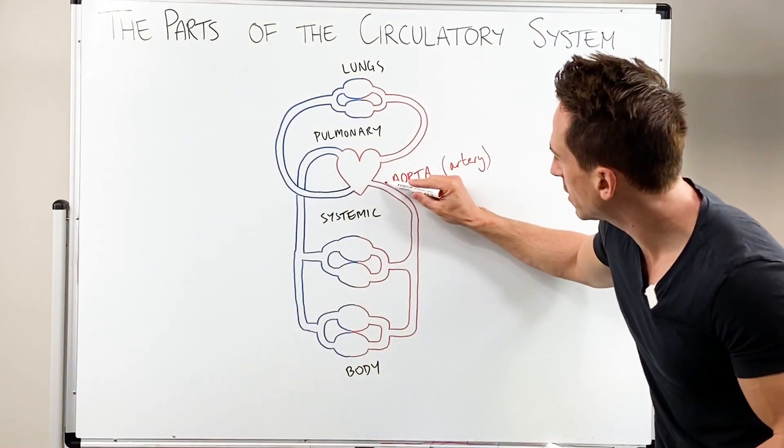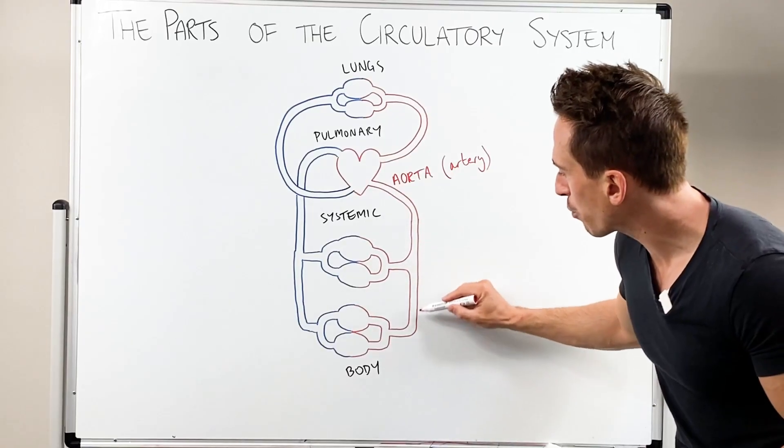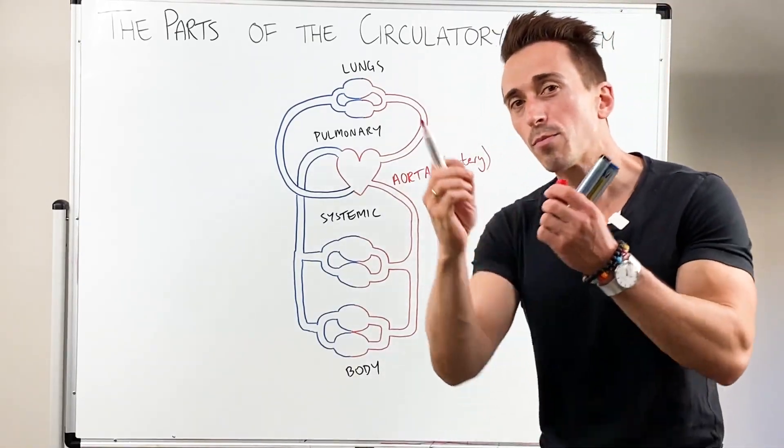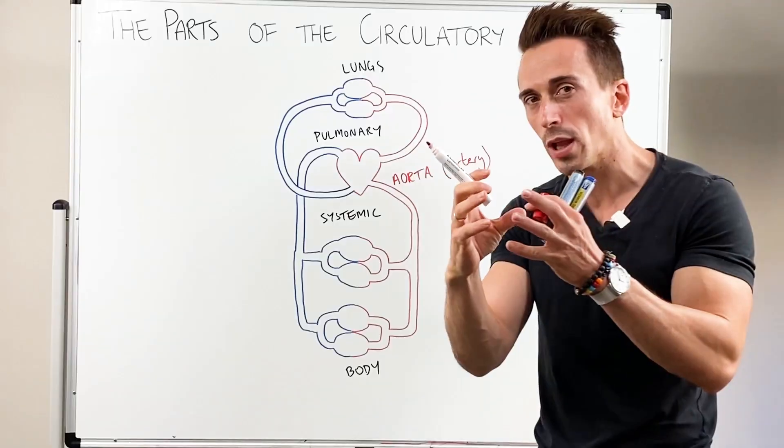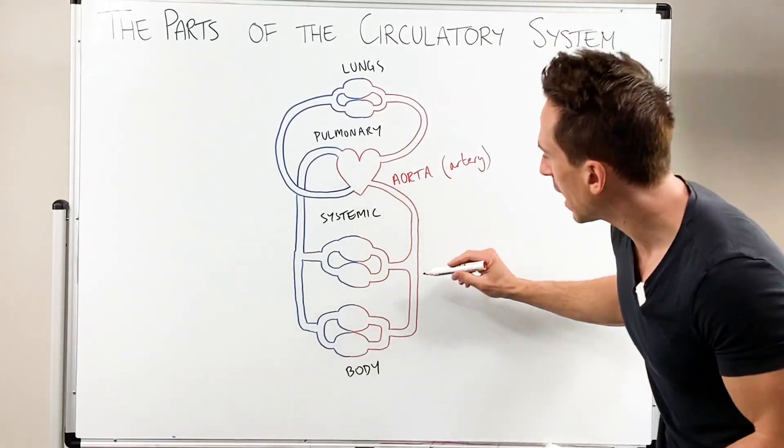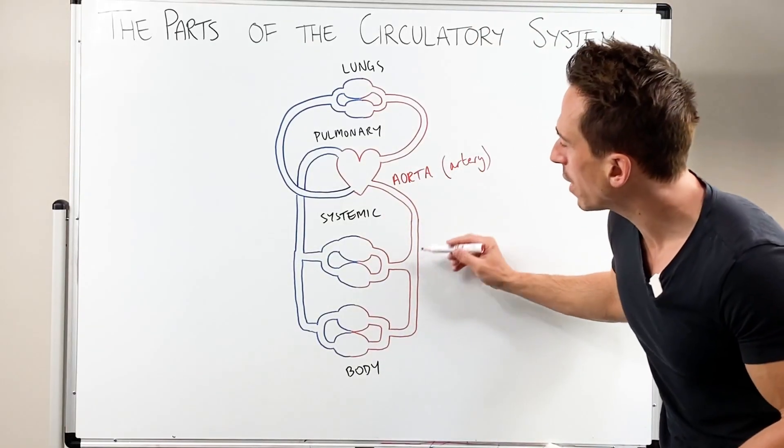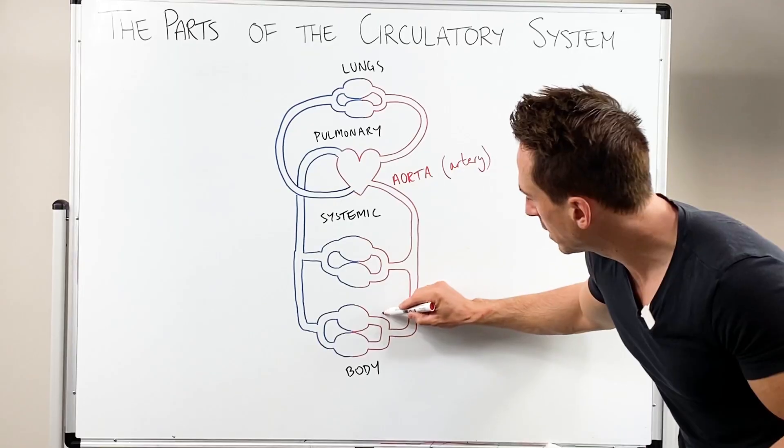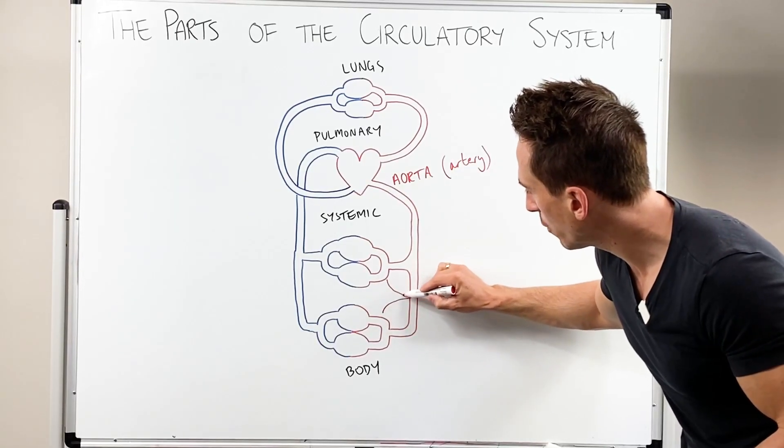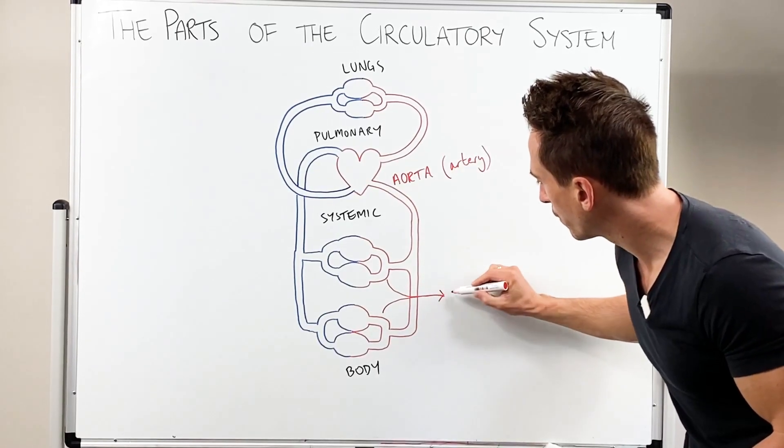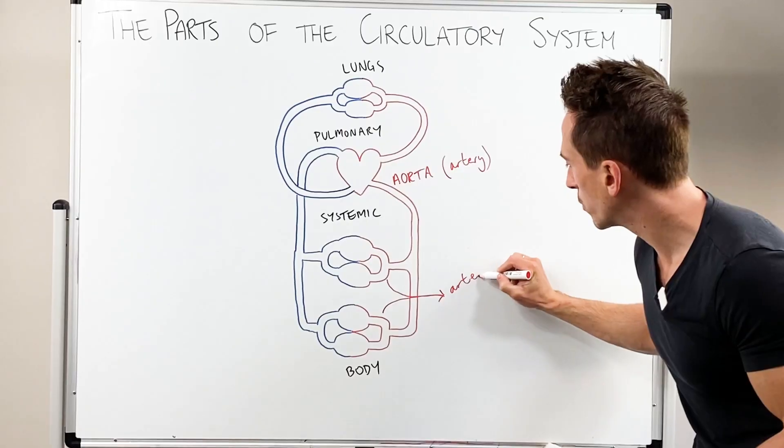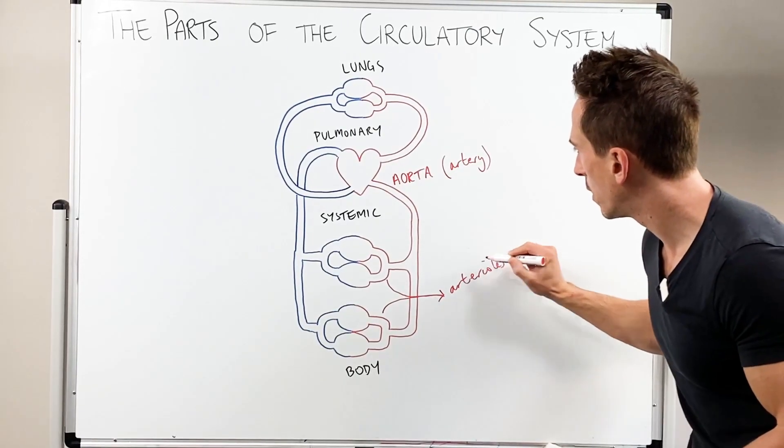So what you're going to find is that this aorta will have various branches. Now once it branches and branches and branches and the blood vessels get smaller, you then turn into something called arterioles. So what we're going to find, for example, is that these are arterioles, which are smaller arteries.